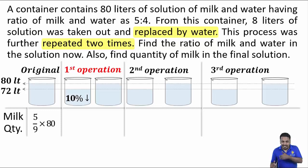Now, water will again increase on replacement but in each operation milk will suffer a decrease of 10%. 10% decrease means a multiplying factor of 9/10.